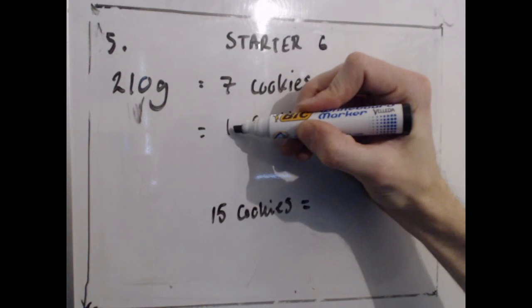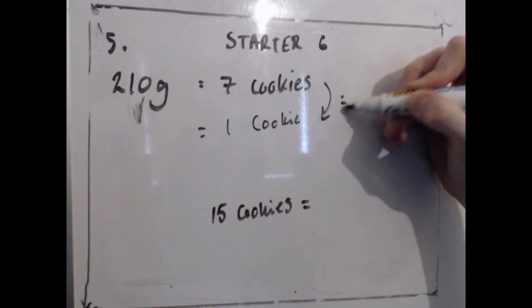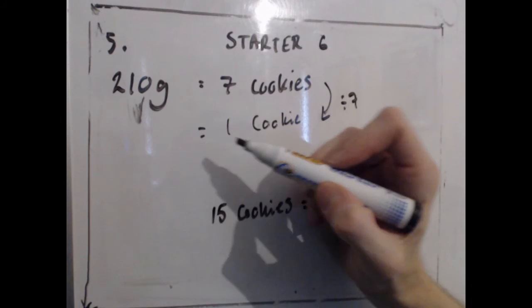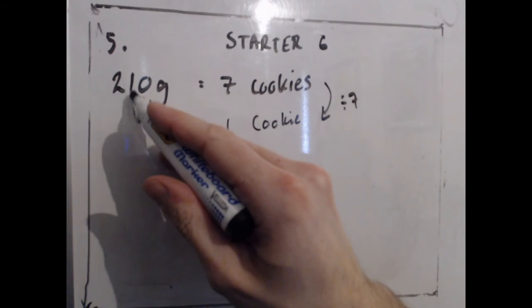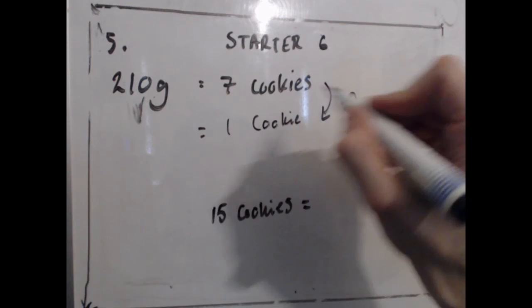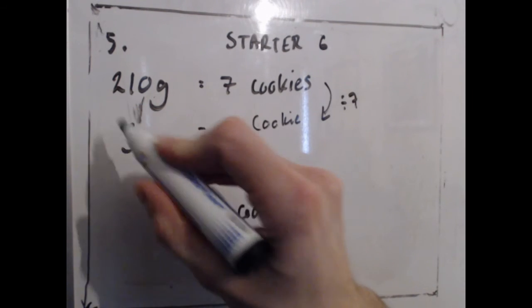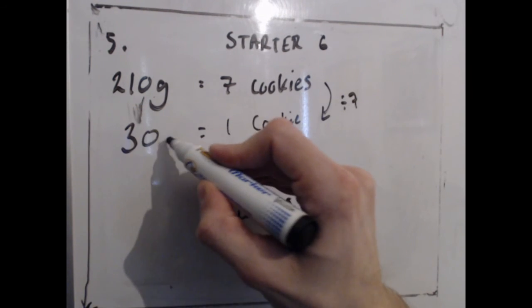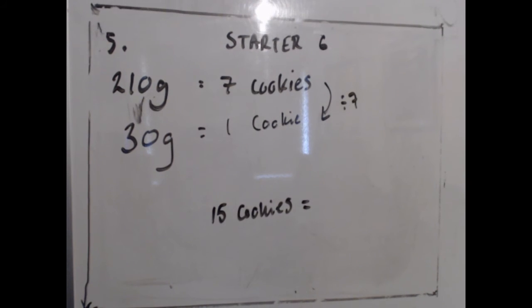Well, 7 divided by 7 is 1, so if I divide the amount of flour by 7, 210, well that's 21 multiplied by 10, 7s into 21 goes 3, 7s into 210 goes 30, so each cookie has 30 grams of flour.